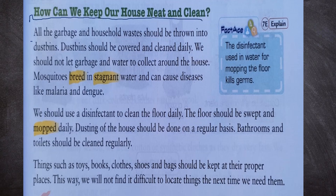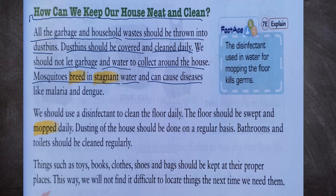To keep our house neat and clean: all garbage and household waste should be thrown into dustbins. Dustbins should be covered and cleaned daily. We should not let garbage or water collect around the house. Mosquitoes breed in stagnant water and can cause diseases like malaria and dengue.